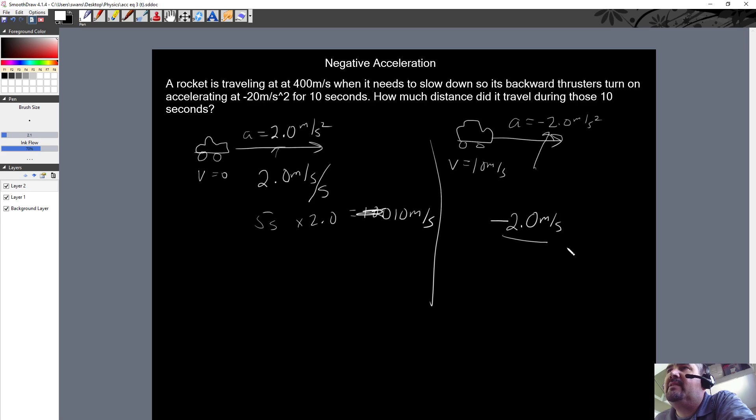We're going to subtract that much speed every second. Every second that we're accelerating, we're taking away 2 meters per second. That's the only difference. Instead of adding and gaining speed, we're losing speed. It's just a negative sign is all it is.